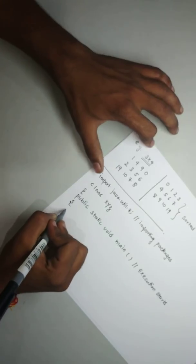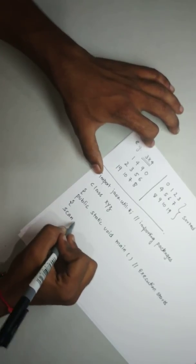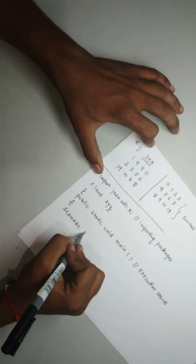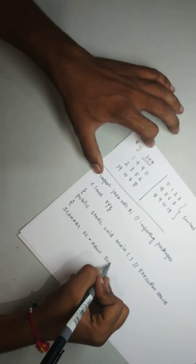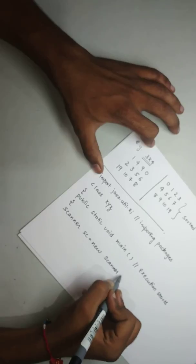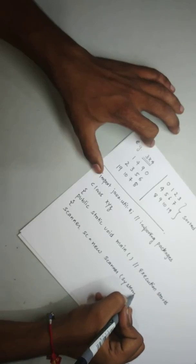After that create the scanner class object. Scanner sc is equal to new scanner System.in. This is the scanner class object that is used for accepting the values.